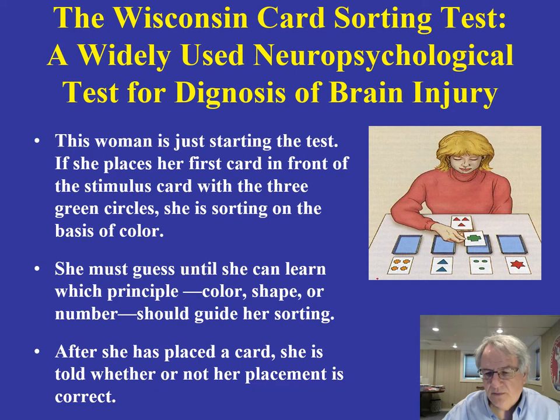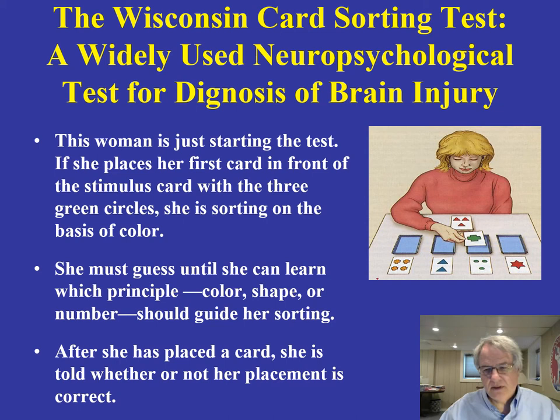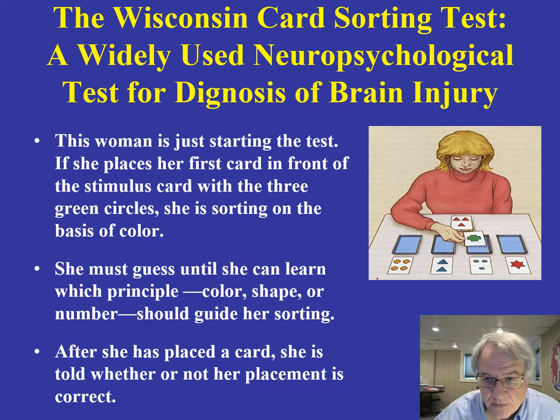What happens with individuals who have suffered some degree of brain damage is they keep perseverating on a particular modality. In other words, they don't recognize that what they're doing is wrong, and it takes them a lot longer to recognize that they should now be sorting on the basis of another modality. This is a very common test used to examine the integrity of the brain and to diagnose whether an individual might be suffering from some degree of brain damage.